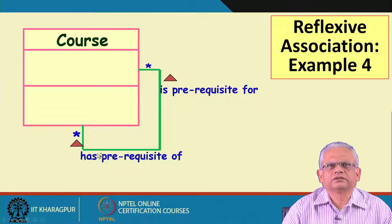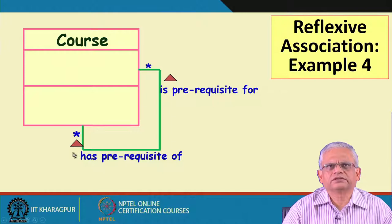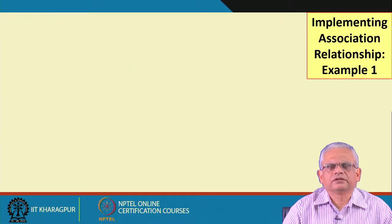Here, a course is a prerequisite for many other courses. The reading direction tells us: a course has a prerequisite of many other courses, and a course is a prerequisite for many courses. Either reading direction is enough — a course has prerequisite of many courses, or a course is prerequisite of many courses.